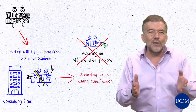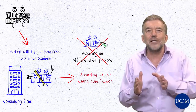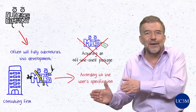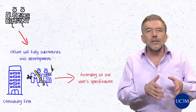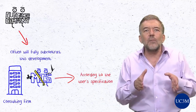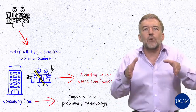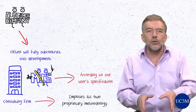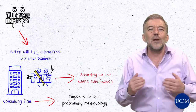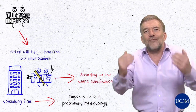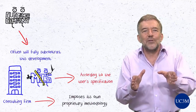The management information system would still be custom-made according to the user company's specification. In the clothing analogy, it would correspond to having a dress tailor-made by a dressmaker. In this case, the consulting company will normally impose its own proprietary systems development methodology, and will normally tout the advantages of its methodology as a key selling point.